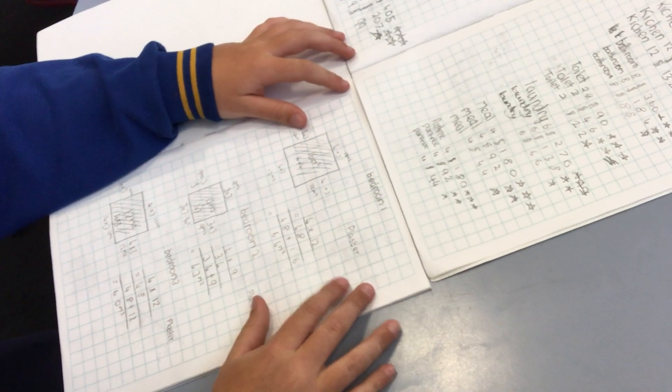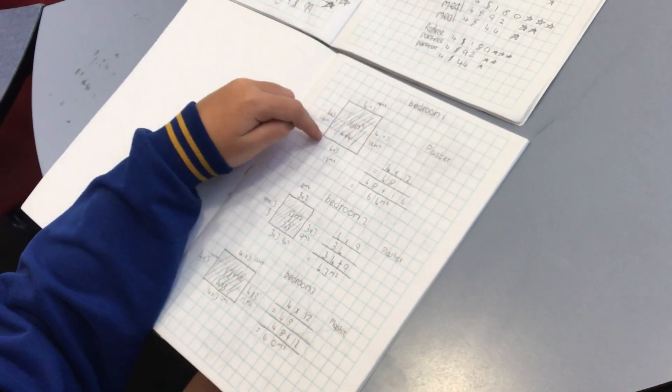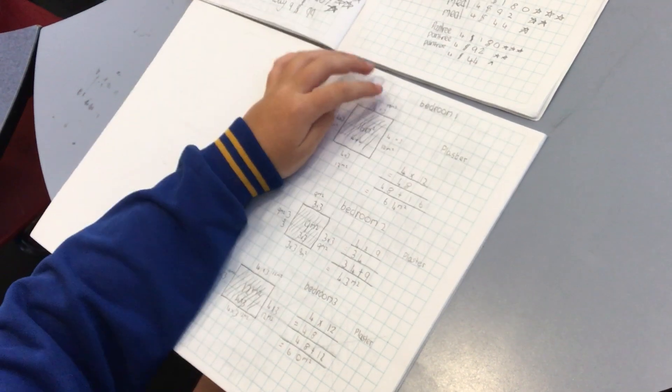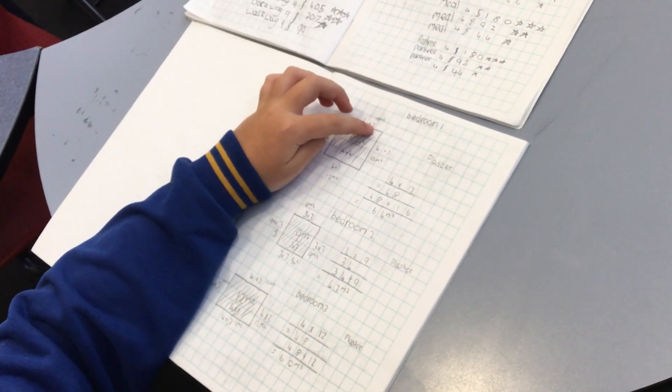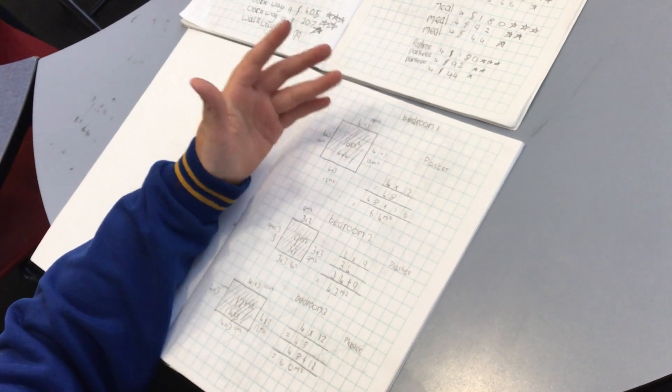I done my plaster. How you do it is you do like four times four, but because the walls are three meters up, you do four by three. Four times three equals 12 meter square.